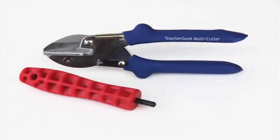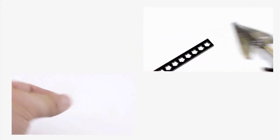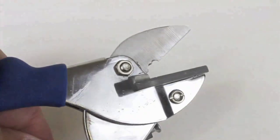The Teacher Geek construction system allows you to build almost any mechanism you can imagine using two simple tools. The dowels and connector strips can be easily cut to size using our multi-cutter. But don't use the multi-cutter to cut metal because you'll ruin the blade.